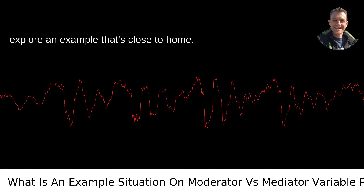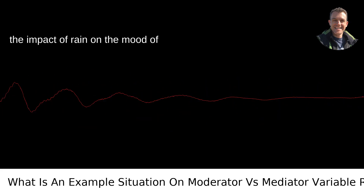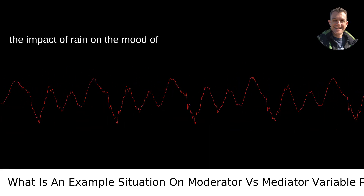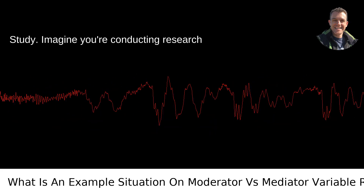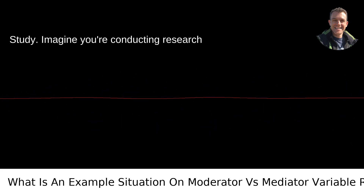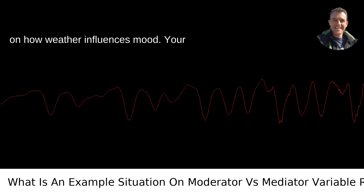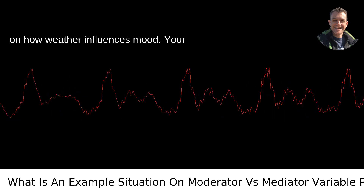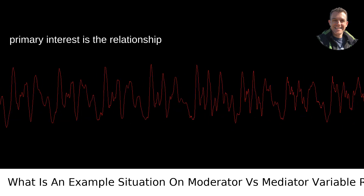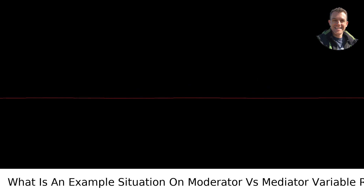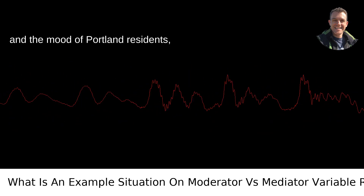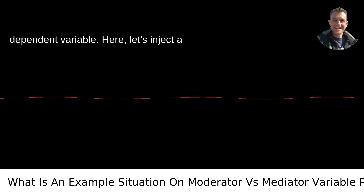Let's explore an example that's close to home: the impact of rain on the mood of Portlanders. Imagine you're conducting research on how weather influences mood. Your primary interest is the relationship between rainfall (independent variable) and the mood of Portland residents (dependent variable).